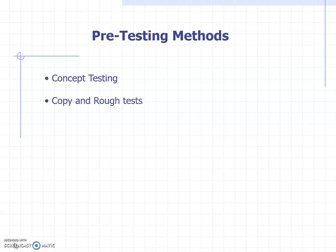There are copy and rough tests. Copy tests involve writing the actual finished advertising copy — that means the script of the ad, what the characters might say, or if it's a print ad like a magazine or newspaper, writing the actual copy, or a direct mail piece. Rough tests mean rough copy — like a rough execution, unfinished basically, like a mock-up of the advertisement.